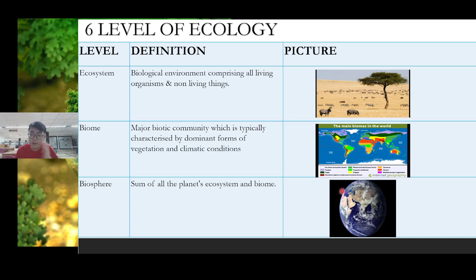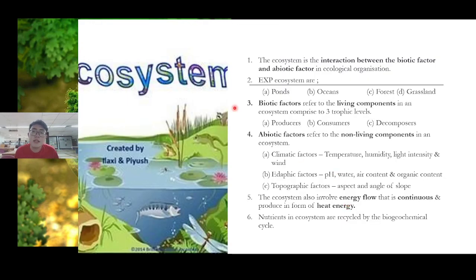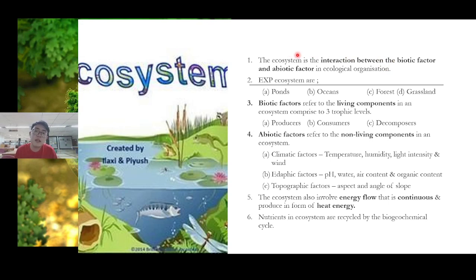This chapter focuses more on the ecosystem. Ecosystem is the interaction between biotic factors and abiotic factors in ecological organization — that is, interaction between living things and non-living things. Examples of ecosystems are ponds, oceans, forests, and grasslands.